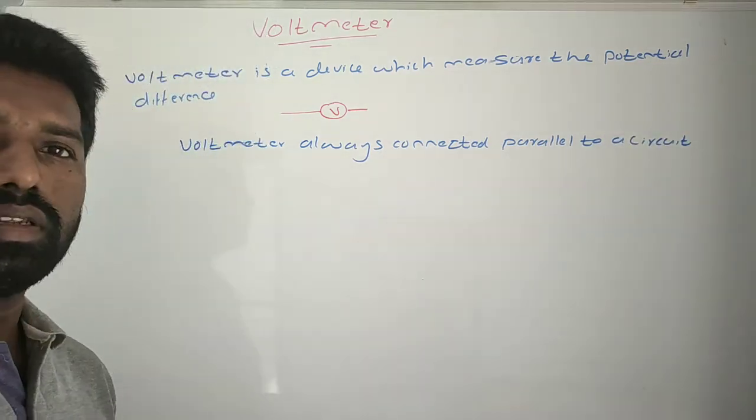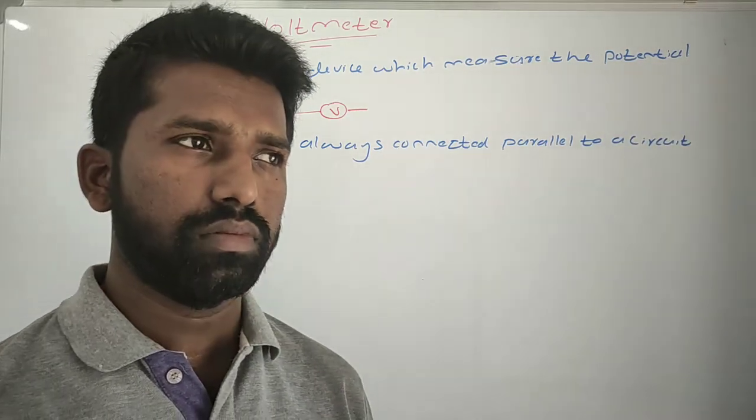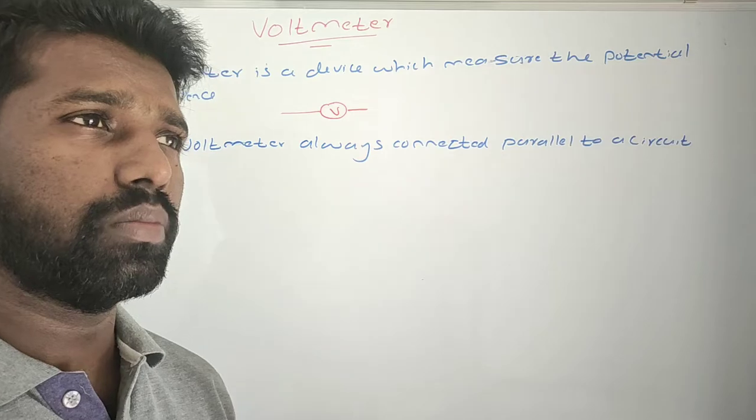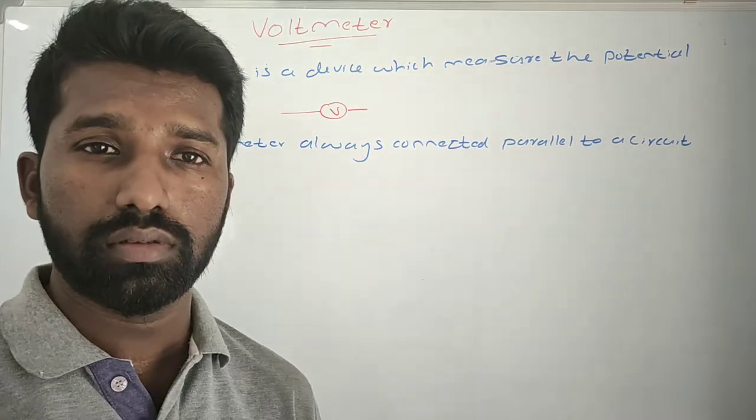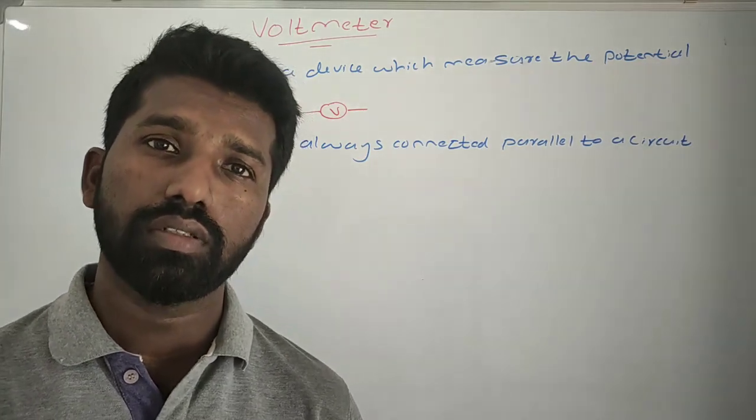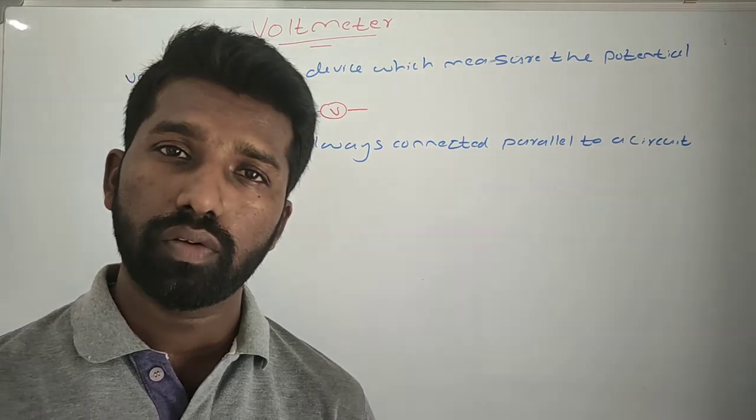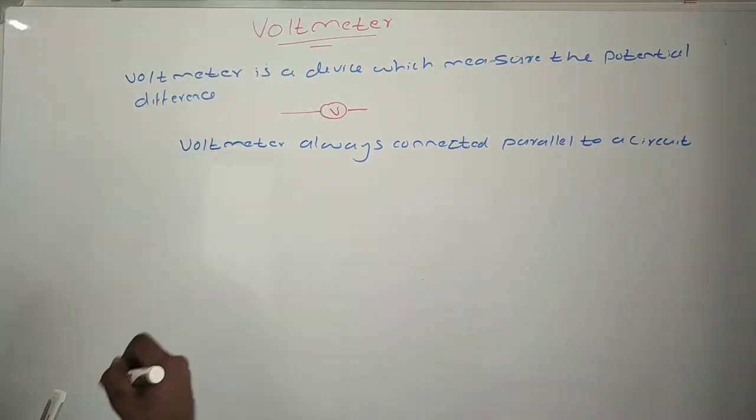Why is it connected in parallel? Because the voltmeter has high resistance. If it is connected in series, it will block the current flow. We will see in the circuit.